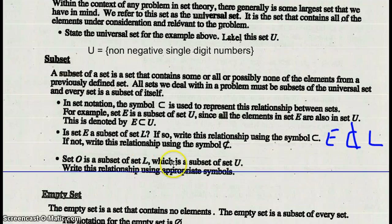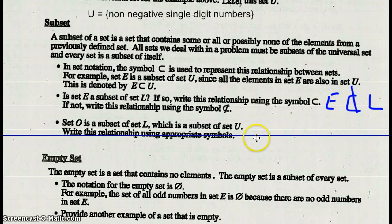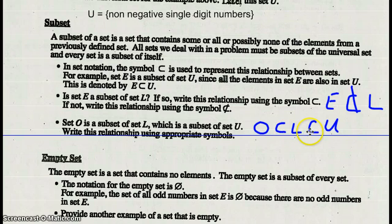Set O is a subset of L, which is a subset of U. Write this relationship using appropriate symbols. It would look like this: O is a subset of L, which is a subset of U.